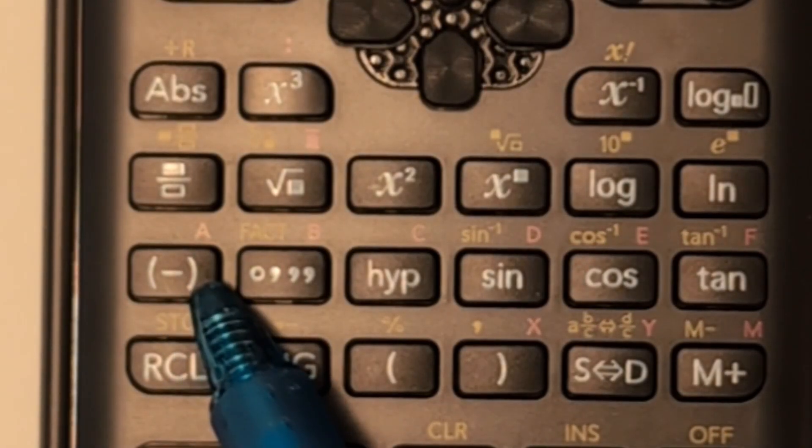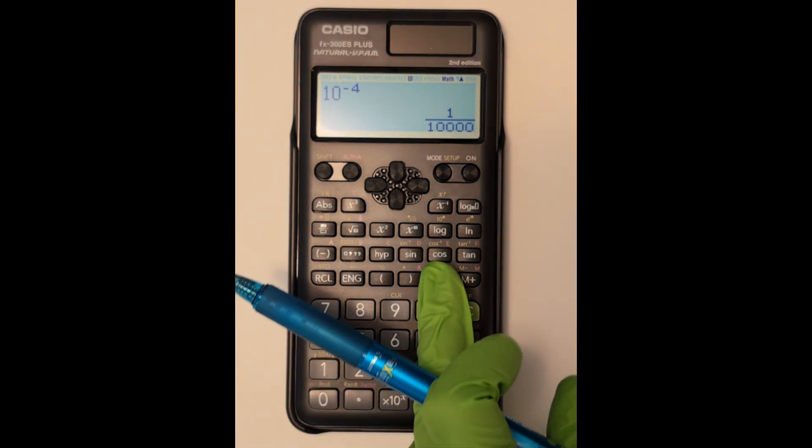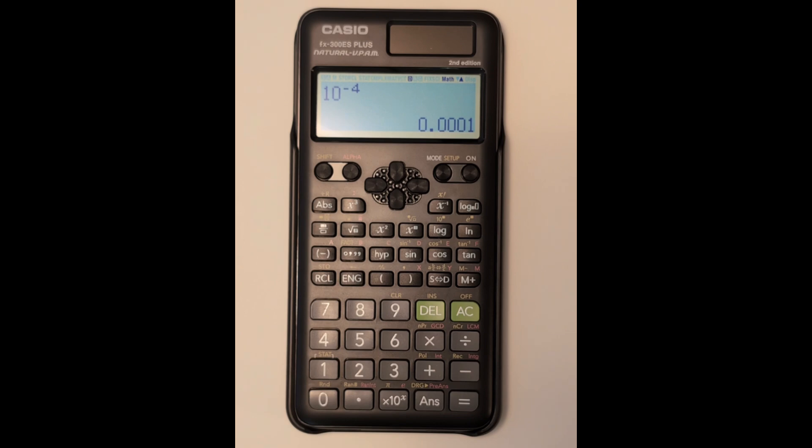Sometimes you may need a negative exponent. Make sure to use this button in the left-hand column for a negative exponent. Do not use the minus sign. Now you can enter 10 to the negative 4, which will give you a number less than 1. Again, you can switch from fraction to decimal with the SD button.